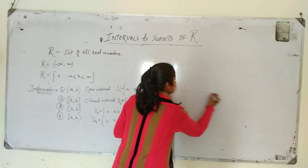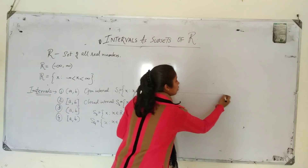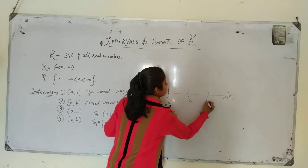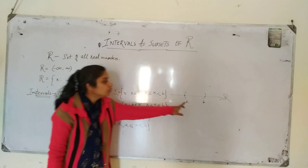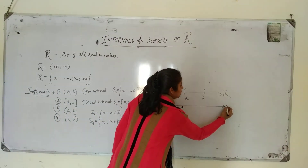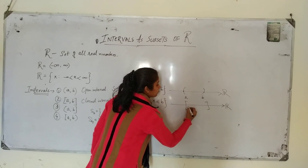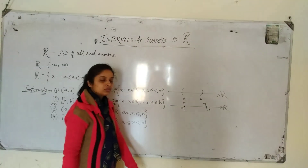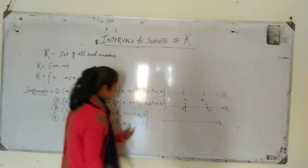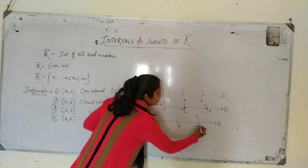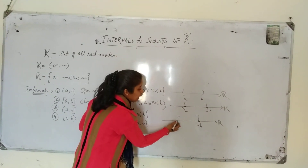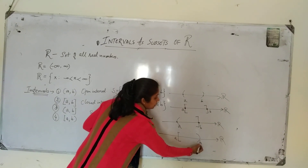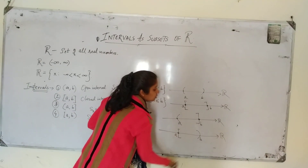On a number line, we can see this very clearly. The open interval (a, b) means points a and b are not included in the interval. The closed interval [a, b] means points a and b are both included. The semi-open interval (a, b] means b is included but a is not. The semi-closed interval [a, b) means a is included but b is not.